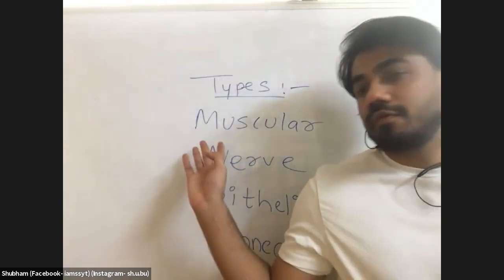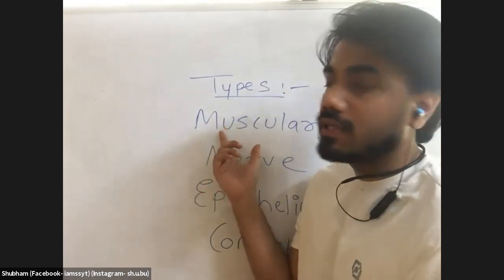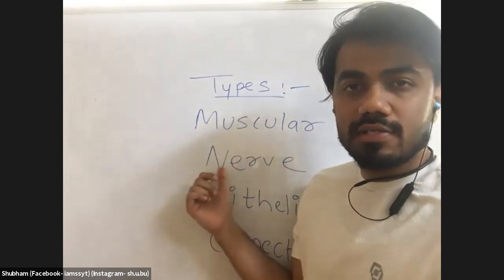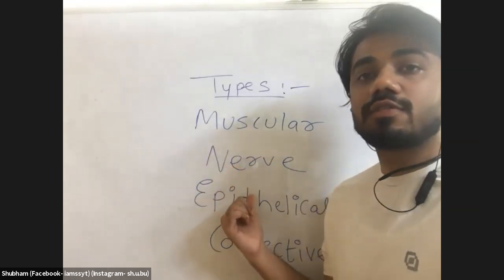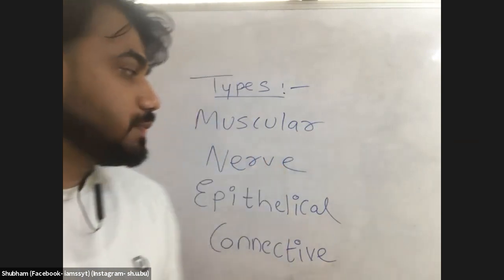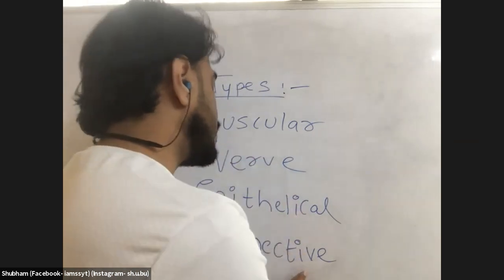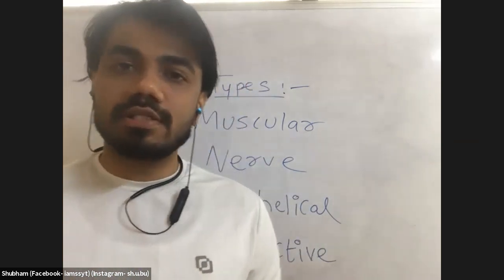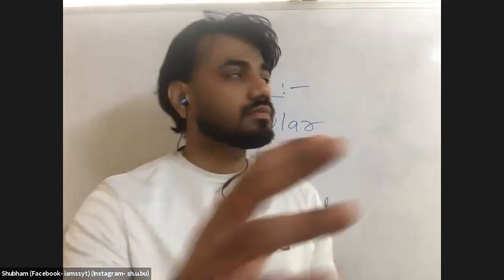For example, the muscular tissue is the group of cells that makes up our muscles. Similarly, the nerve tissue is the group of cells making up our nervous system — all the neurons and nerves. The epithelial tissue is our epidermis, the skin, seen on the surface anatomy. The connective tissues are found in between the joints, connecting our bones together — like tendons and ligaments — and connecting bones and muscles together.